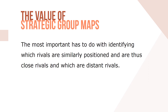Strategic group maps are revealing in several respects. The most important has to do with identifying which rivals are similarly positioned and thus close rivals. Generally, the closer strategic groups are to each other on the map, the stronger the cross-group competitive rivalry tends to be.